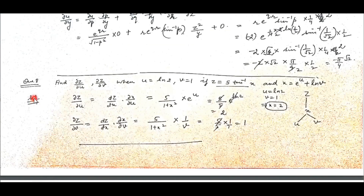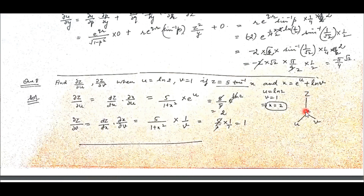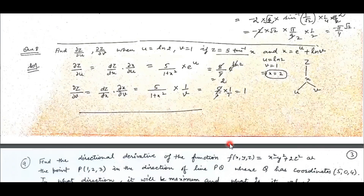In question number 8, z is a function of x alone, and further x is a function of u and v. To find the partial derivative of z with respect to u, apply the chain rule: take its derivative with respect to x, then the derivative of x with respect to u. Since z is a function of x alone, that derivative is a simple derivative, and since x depends on two variables, that derivative is a partial derivative. Substitute all values and simplify to get the value of the derivatives.